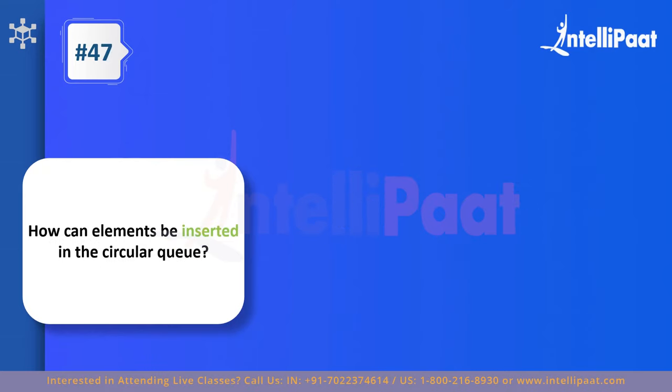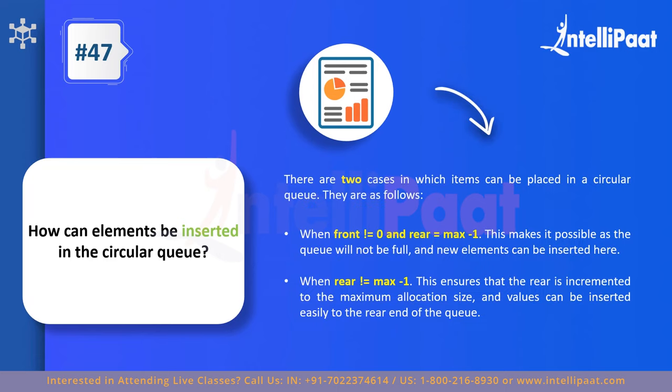Question forty-seven: how can elements be inserted into a circular queue? A circular queue connects the last element back to the first, forming a circle. There are two conditions for insertion. First, when the front value is not zero but the rear value equals max minus one — this indicates the queue is not full and you can begin inserting. Second, when rear is not equal to max minus one — this also means the queue is not full and values can be added wherever required.